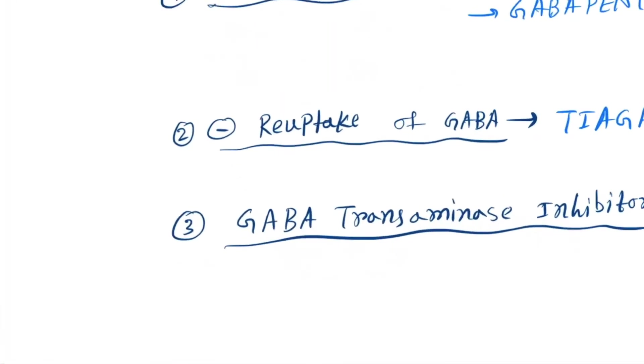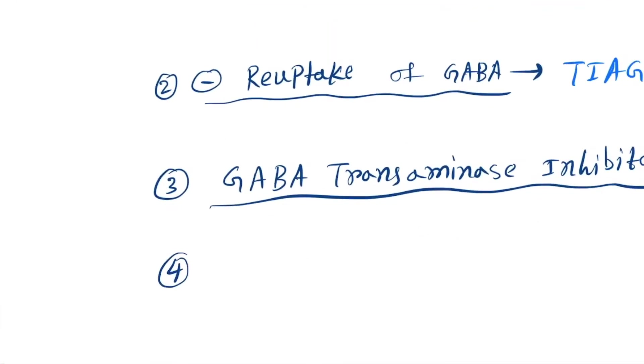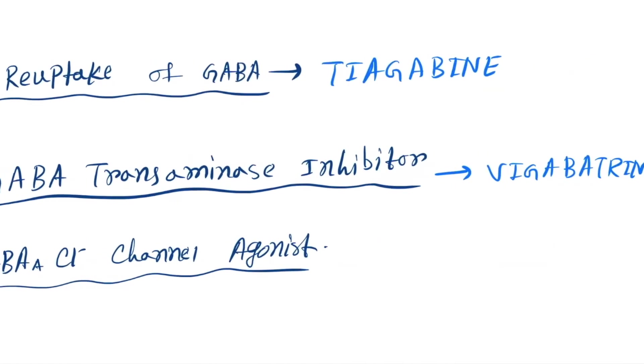And the number four one is the GABA-A Cl channel agonist. So it will enhance the receptor, attached to the receptor and the function will be enhanced. So drugs are barbiturates and benzodiazepines.